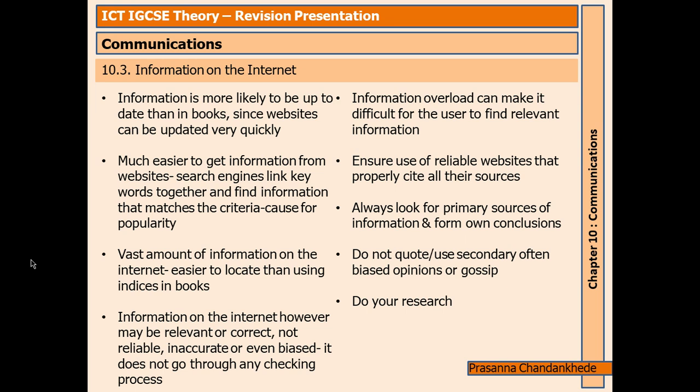Information on the internet is more likely to be up to date than in books, since websites can be updated very quickly. Search engines link keywords together and find information that matches the criteria. There is a vast amount of information on the internet, and it's easier to look at than using indices in books. However, information on the internet may be irrelevant, incorrect, not reliable, inaccurate, or even biased — it does not go through any checking process. Information overload can also make it difficult for the user to find relevant information.